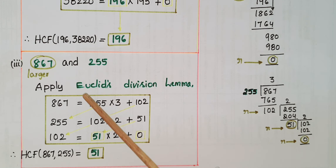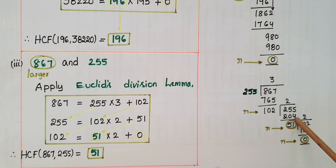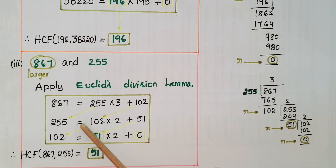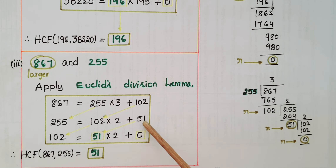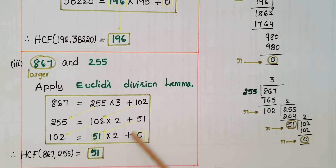The remainder is not equal to 0, so again apply Euclid's division lemma on 255 and 102. Dividing 255 by 102: 102 twos are 204, then 255 minus 204 gives remainder 51. So 255 is equal to 102 into 2 plus 51. The remainder is not 0, so apply again on 102 and 51: 51 twos are 102, remainder is 0. The HCF of 867 and 255 is equal to the divisor, which is 51.